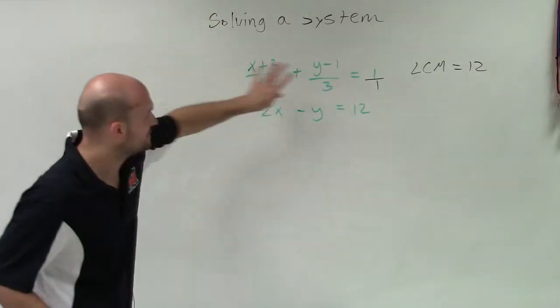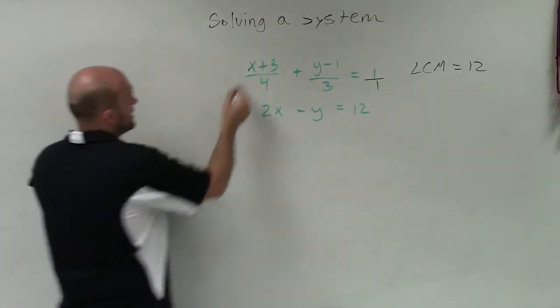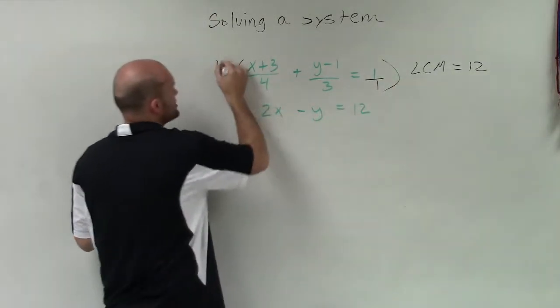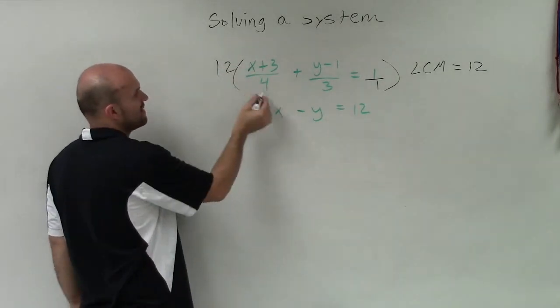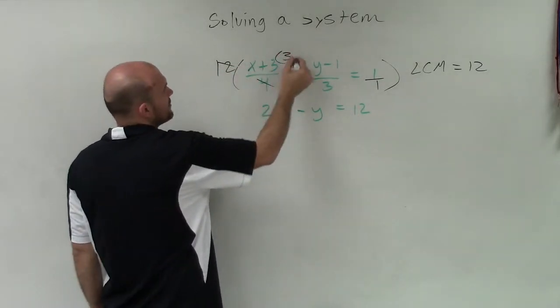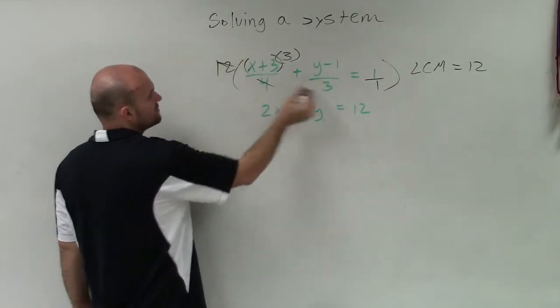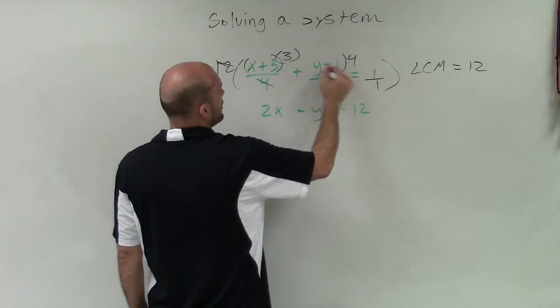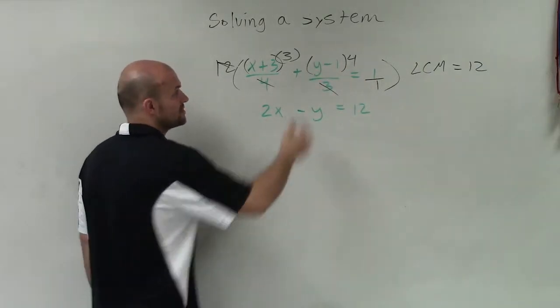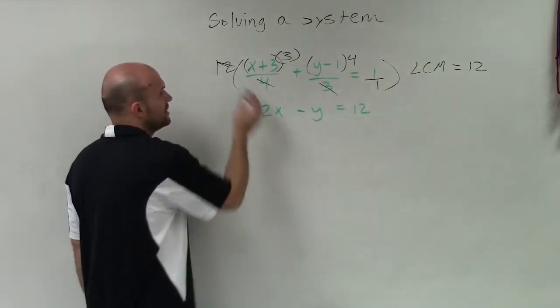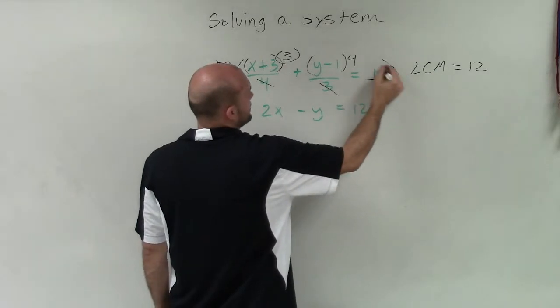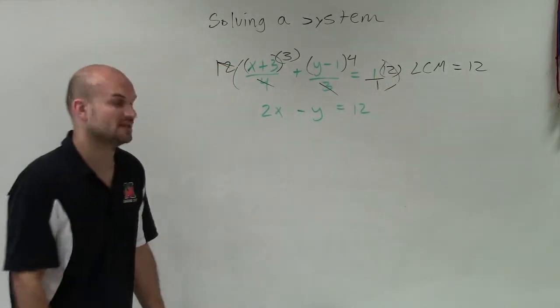So I can eliminate these if I multiply this whole equation by 12. Now, by doing that, 12 divided by 4 leaves me with 3. So I'm going to multiply 3 times x plus 3. 12 divided by 3 leaves me with 4, right? So now I'm going to have 4 times y minus 1. And then 12 times 1 is not going to divide out anything, so I'll be left with 12.